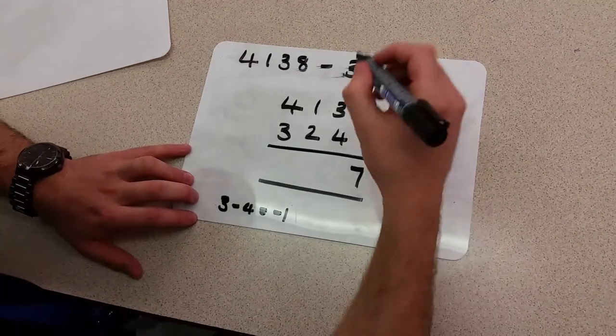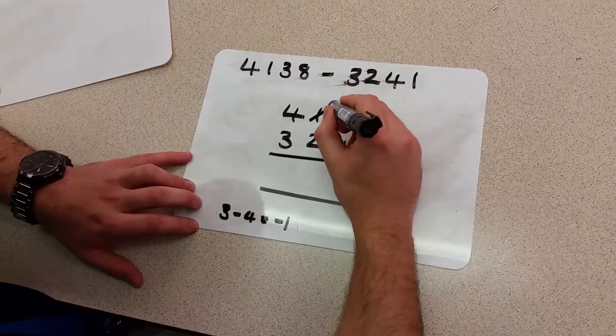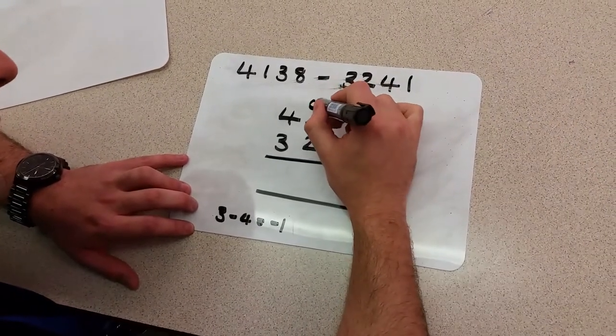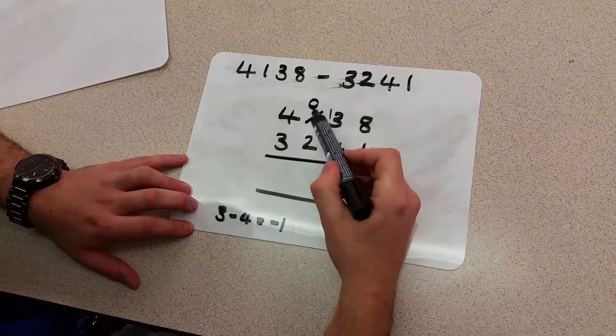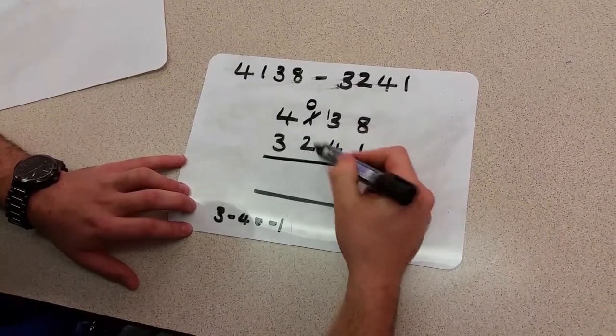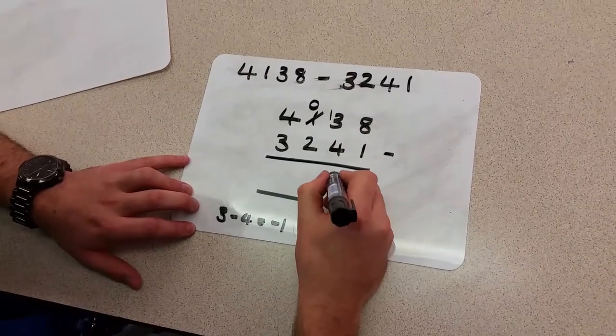And what are we going to do? We're going to borrow from the hundreds column. Now when we borrow 1, this makes this 3 become 13, and this 1 becomes 0. We've borrowed 1 to make this 13, and this becomes 0. This is now 13 take away 4. If we take 4 away from 13, that gives us 9.